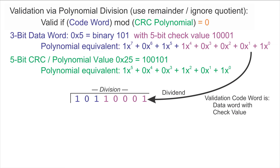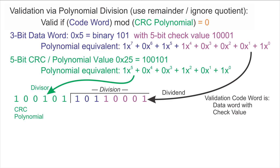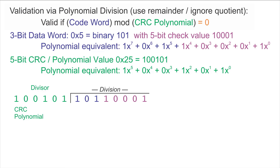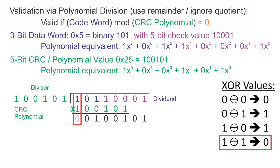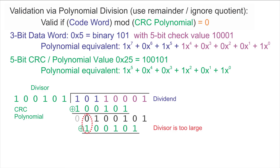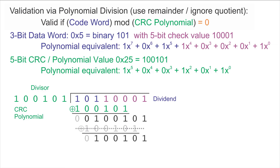For long division, we take the coefficients of the code word as the dividend, and the coefficients of the CRC polynomial as the divisor, and perform a long division algorithm. The first step is a trial subtraction — since these are binary coefficients, instead of subtraction we use XOR. In this case the subtraction will work because the top two bits of the active dividend and the divisor are both 1, giving a guaranteed 0 in the top position. We then do another conditional XOR, but find out the current top bit of the dividend is 0, so no XOR is performed and we skip that step.